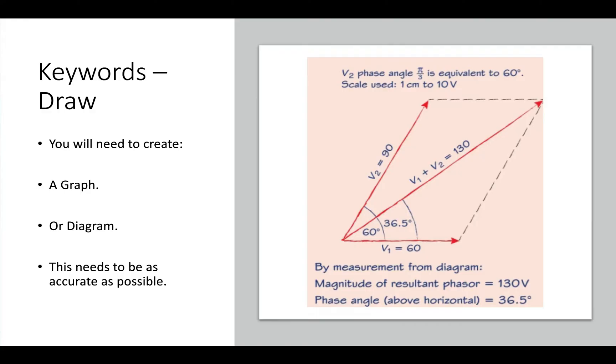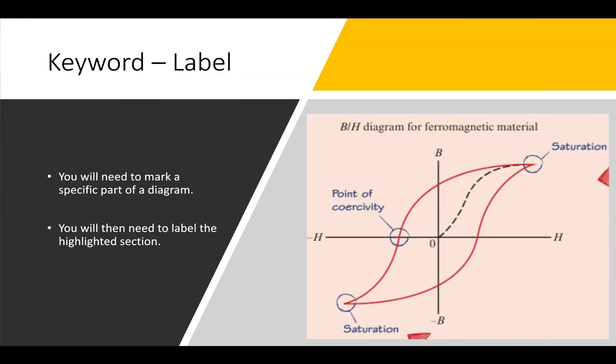'Label' - you will need to mark a specific part of a diagram. You will need to label the highlighted section. So as they've done here, for example, they've circled the word saturation. So quite simply, label it. Don't describe it, don't do anything but highlight the section that's needed and simply label it.